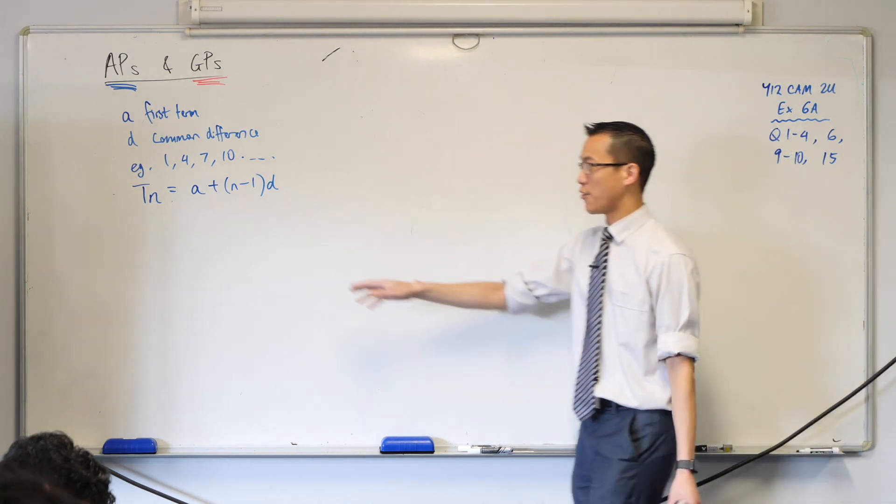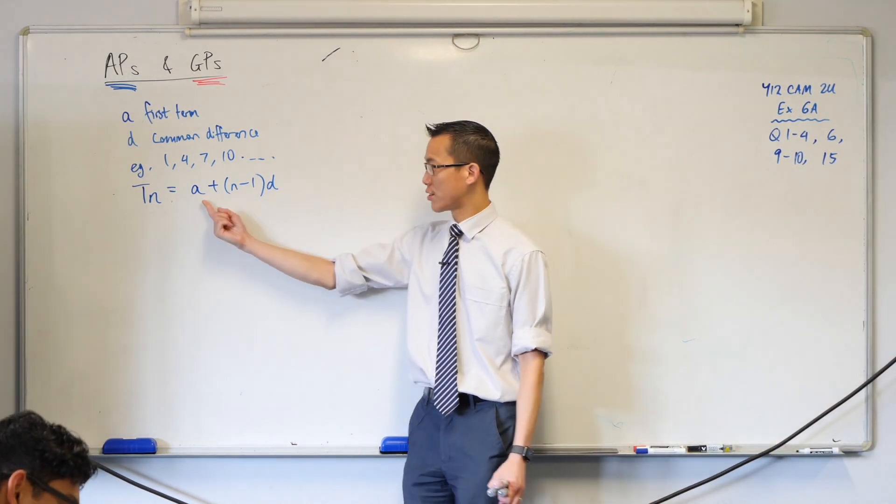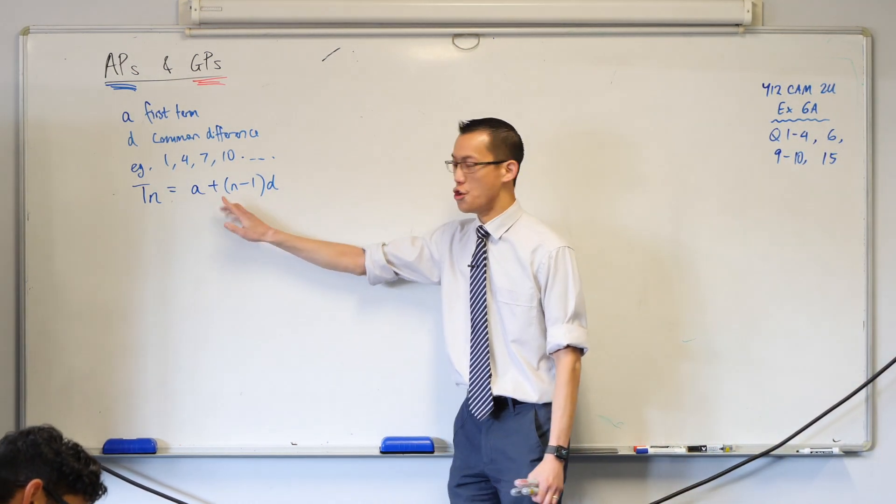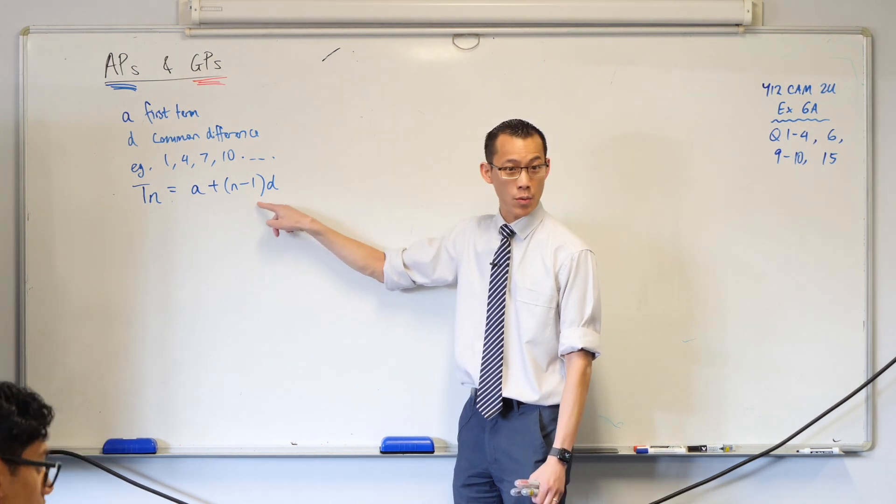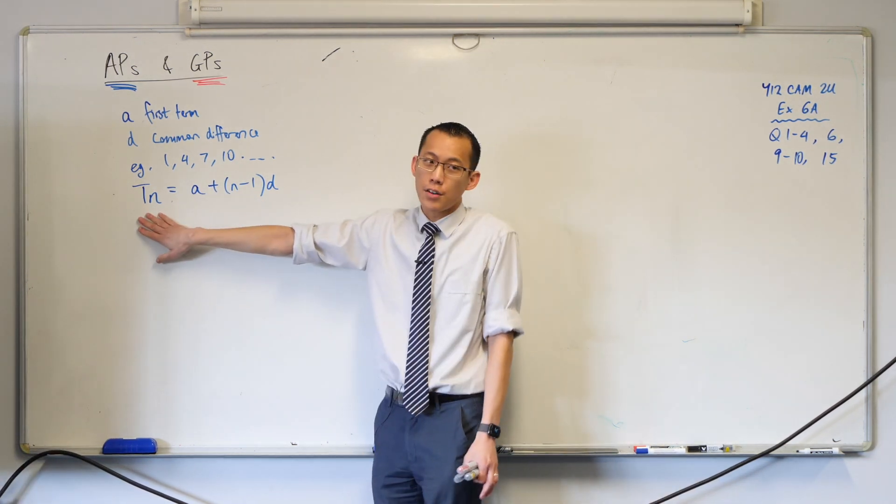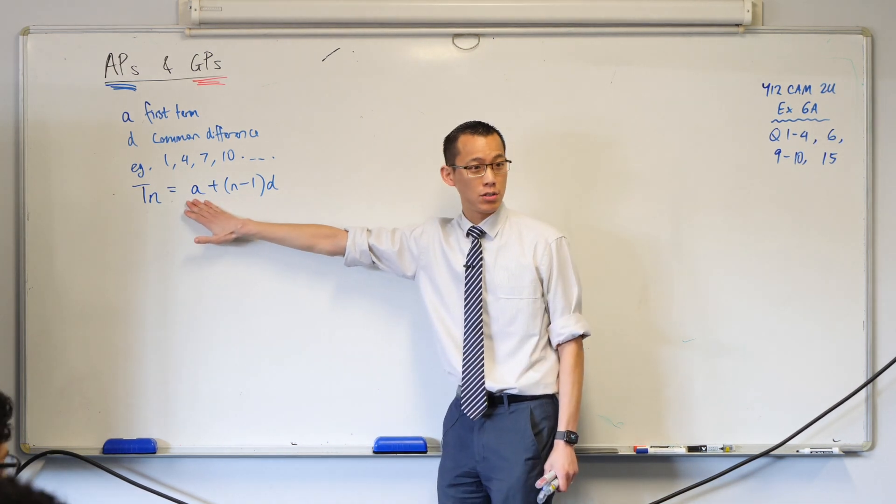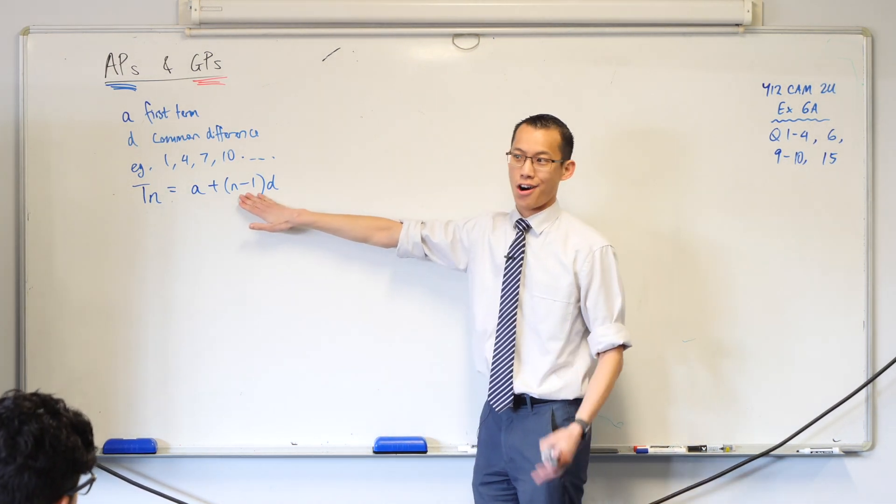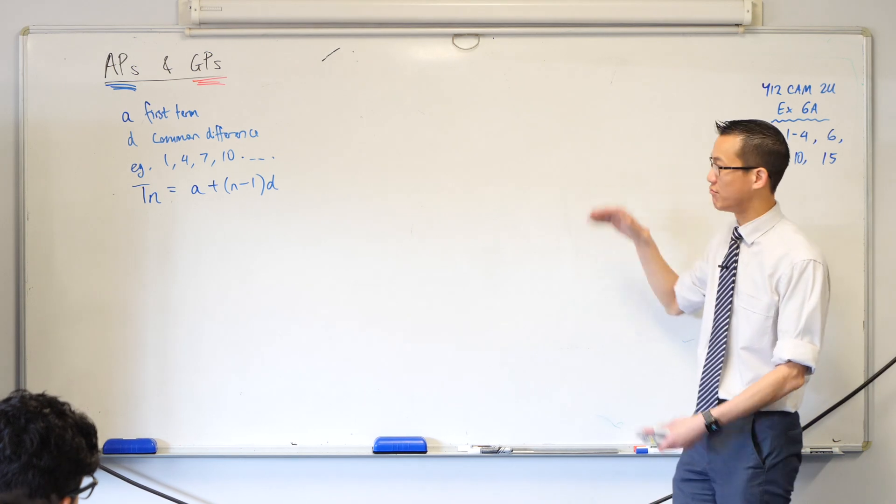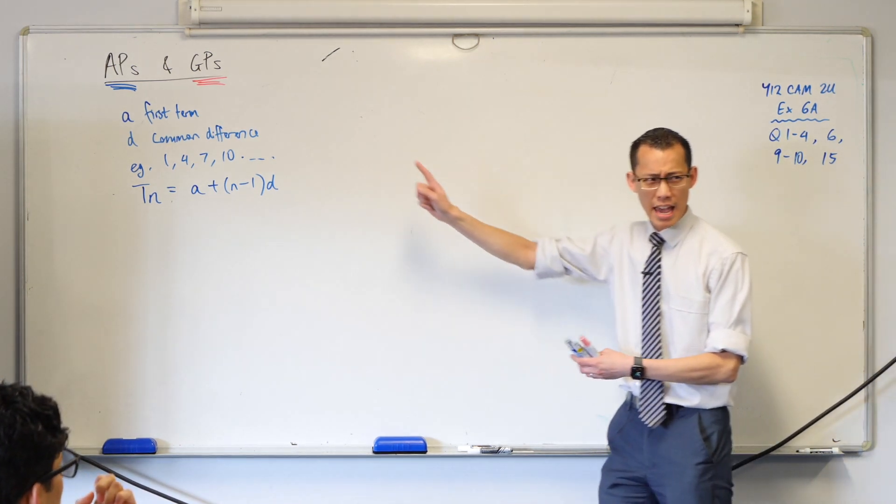Okay, very good. So the whole idea here is if you want to know the first term, you just have A plus no lots of the difference. So 1 take away 1 times the difference. But then if you're like I want the 100th term, you'll start with that first term still, and then you'll add 99 lots of the common difference because you had to go along 99 steps. Okay, so that's the nth term.